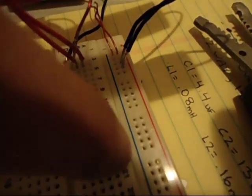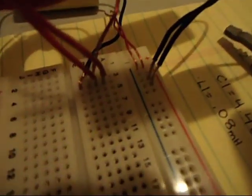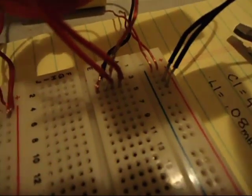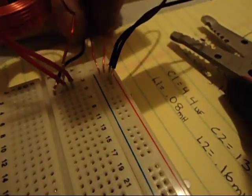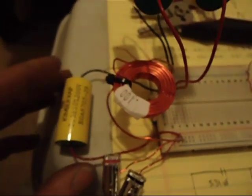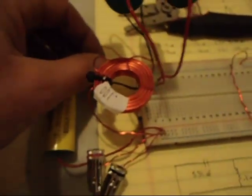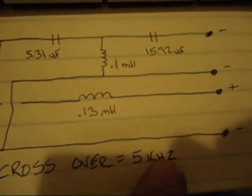There is a disconnect through here. There's my positive. That's my tweeter crossover at 5,000 hertz.